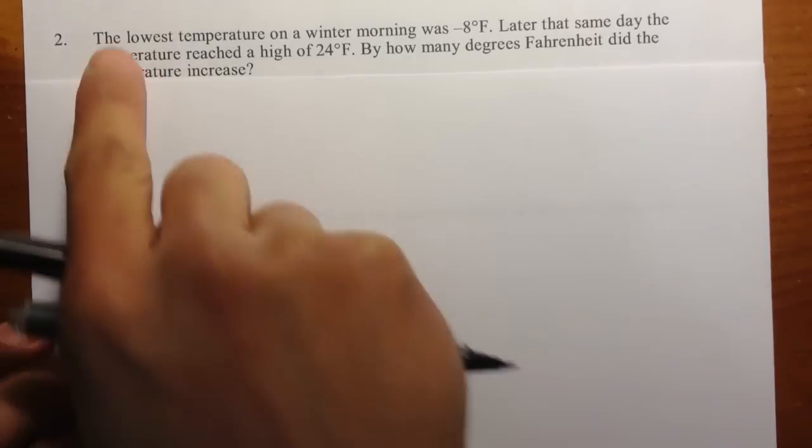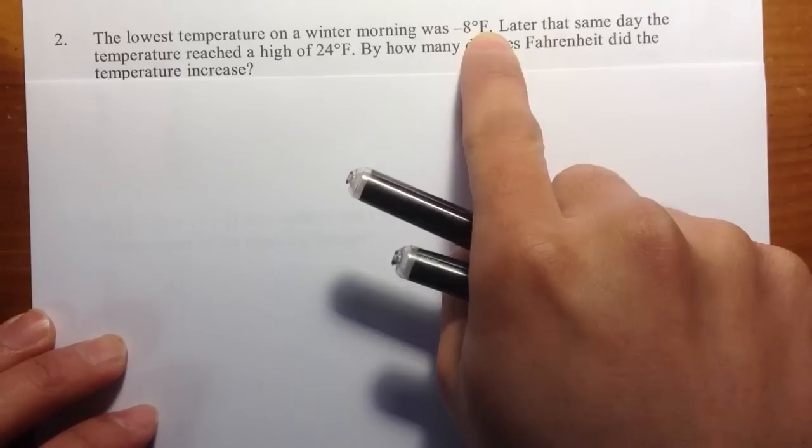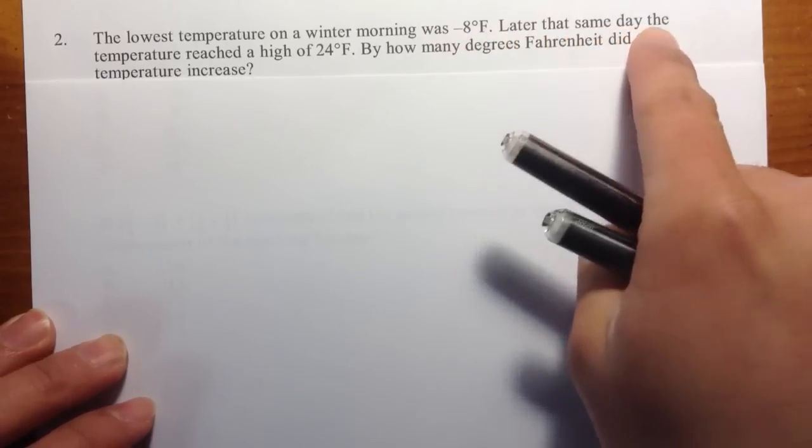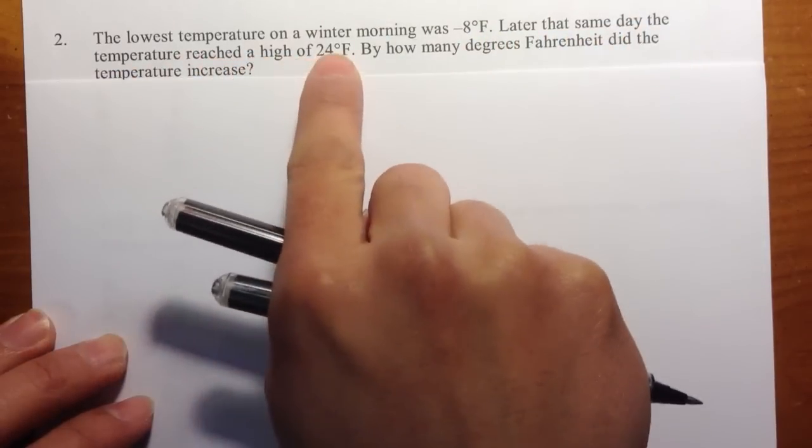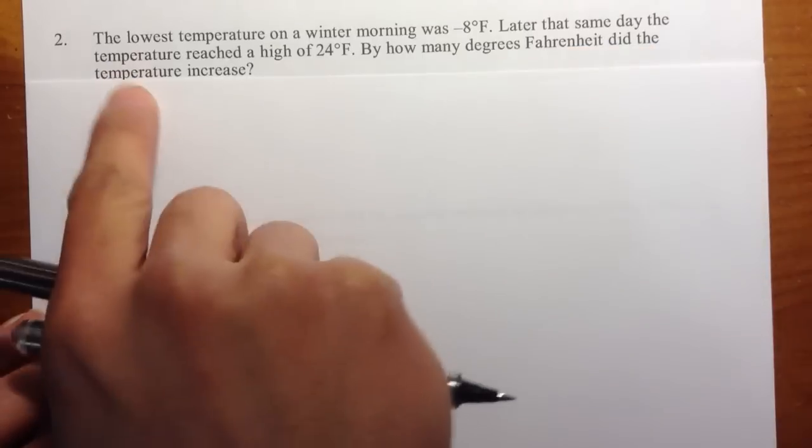Okay, question number two. The lowest temperature on a winter morning was negative 8 degrees Fahrenheit. Later that same day, the temperature reached a high of 24 degrees Fahrenheit. By how many degrees Fahrenheit did the temperature increase?